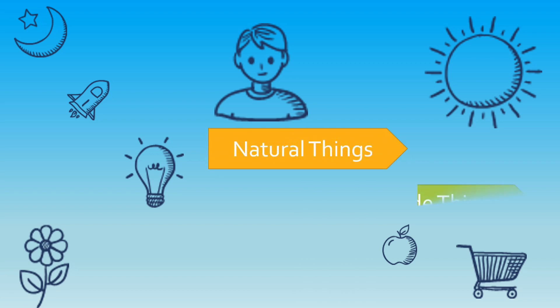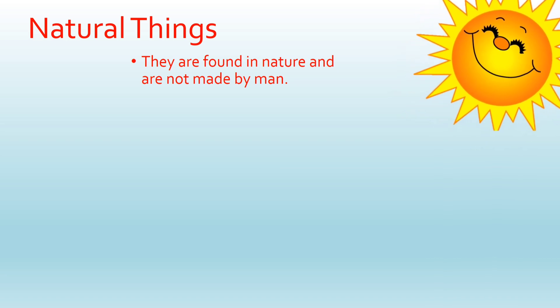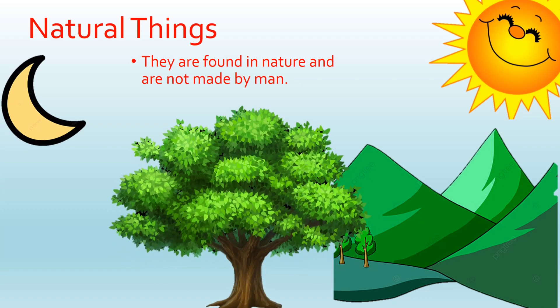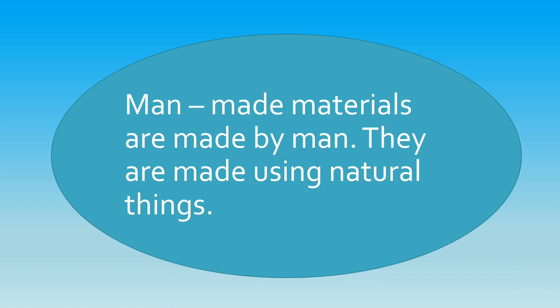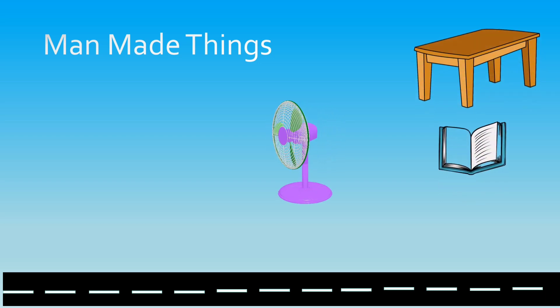Let us take a look and try to understand them one by one. First, think of those things that come directly from the environment, like the Sun, air, mountains, Moon, plants, water, and animals. These things exist in nature and people cannot make them, so these are natural things.